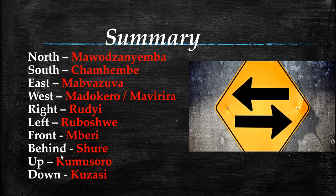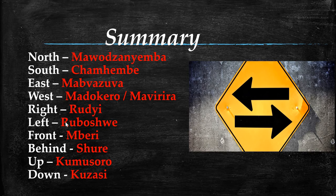If you look at the last two words, they start with Ku. You can also put Ku in front of any of these words. For example, if you put Ku on North — Mawodza Nyemba — it becomes Kumawodza Nyemba, which simply means 'to the North' or 'the Northern side'. Similarly, Ruboshkwe becomes Kuruboshkwe, meaning 'the left hand side'.